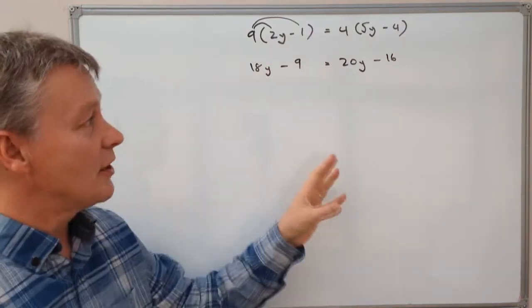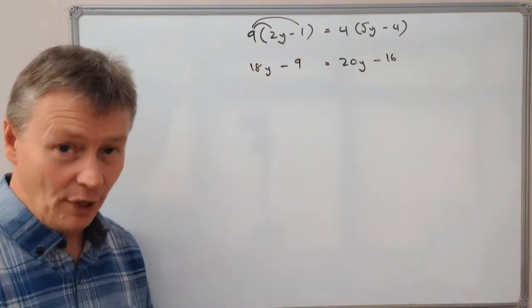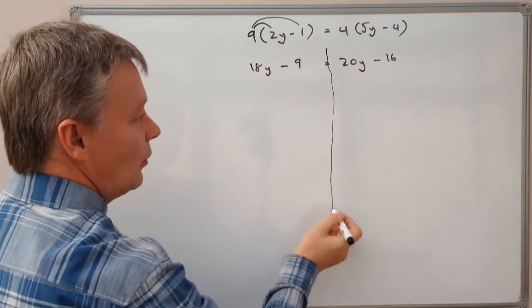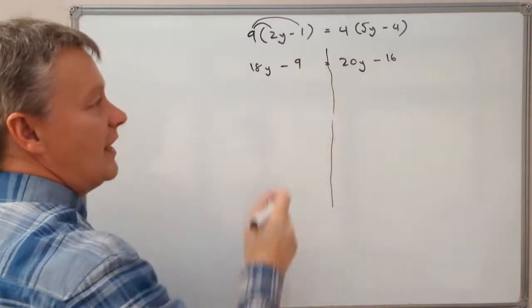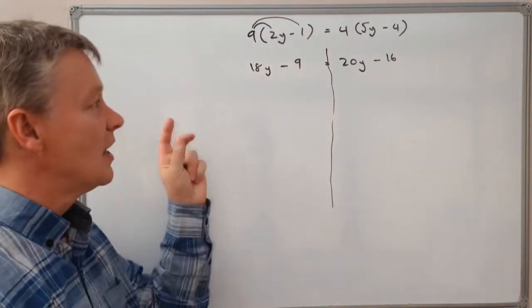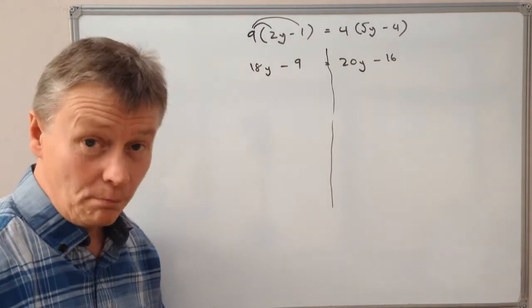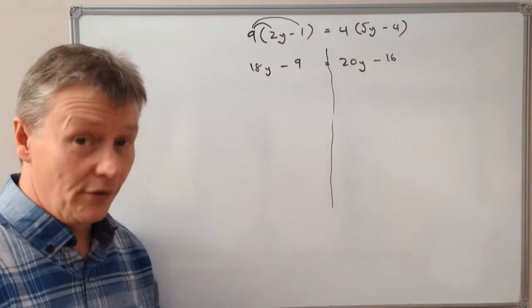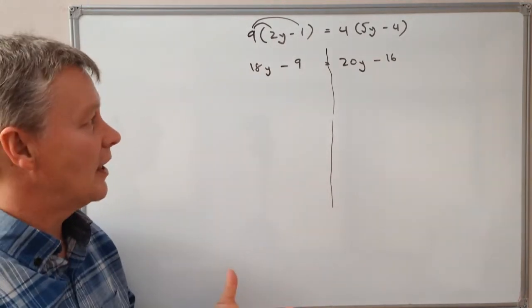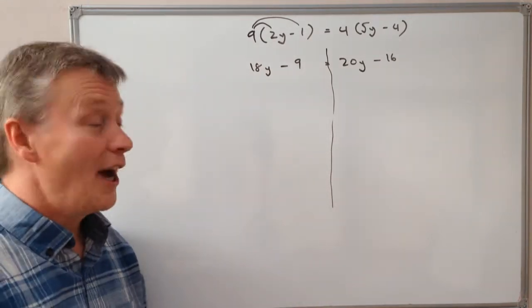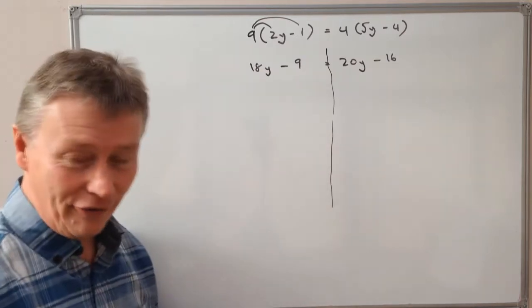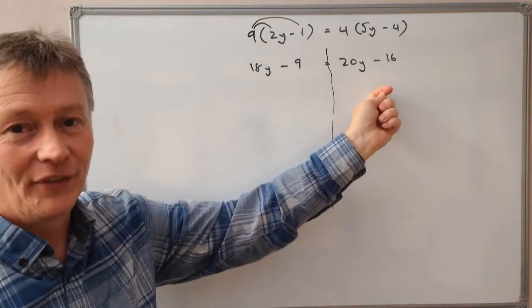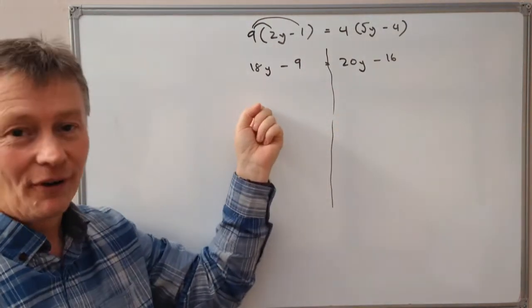We've got an equation now that balances on both sides, and we're going to use that fact of balancing to make sure that we work around the equal sign because it must always remain in balance. What I did last time is I took 20y away from both sides. On this occasion, I'm going to do it differently. This time I'm going to take 18y from both sides so my y value ends up on this side and my number on that side.